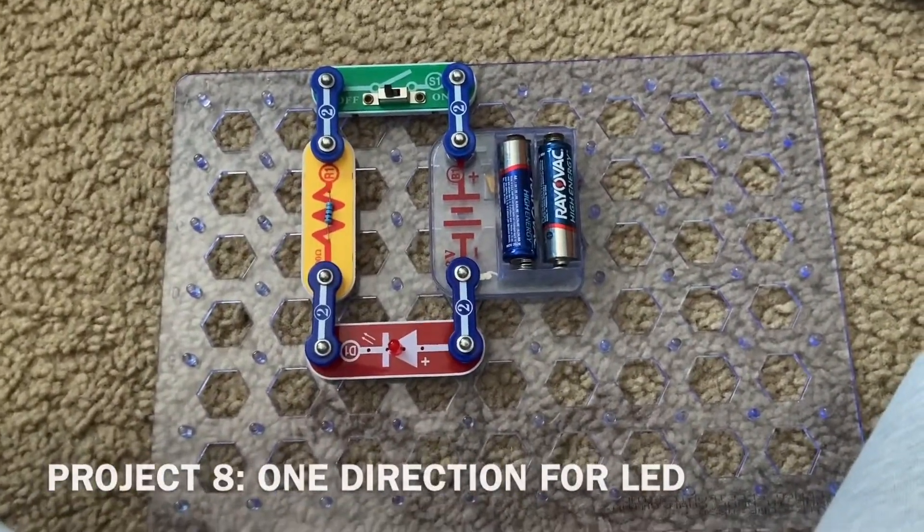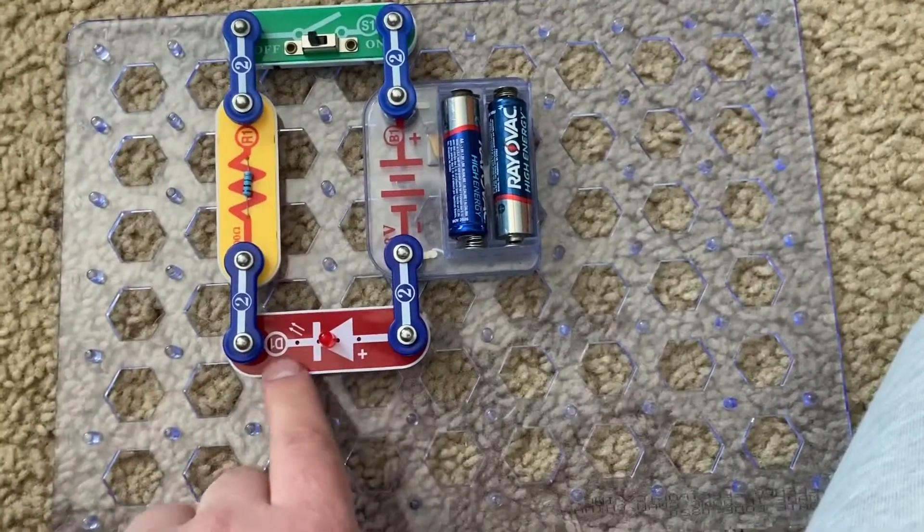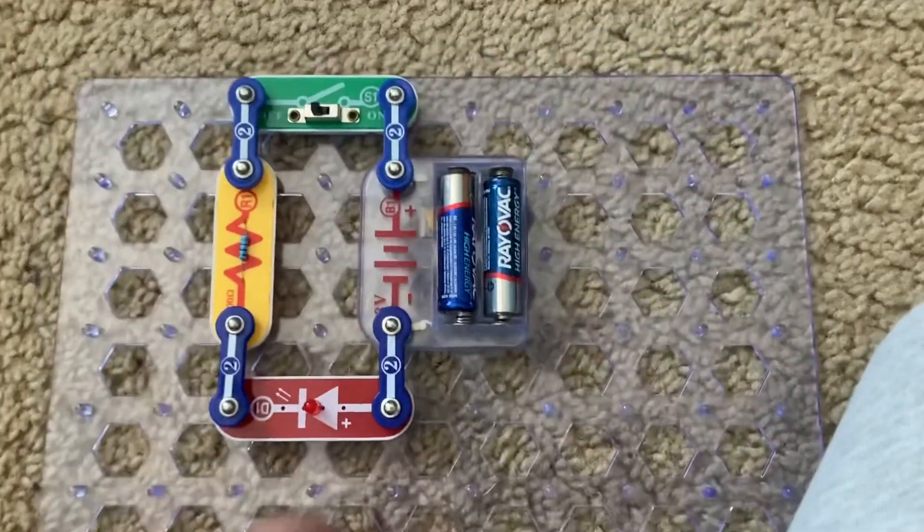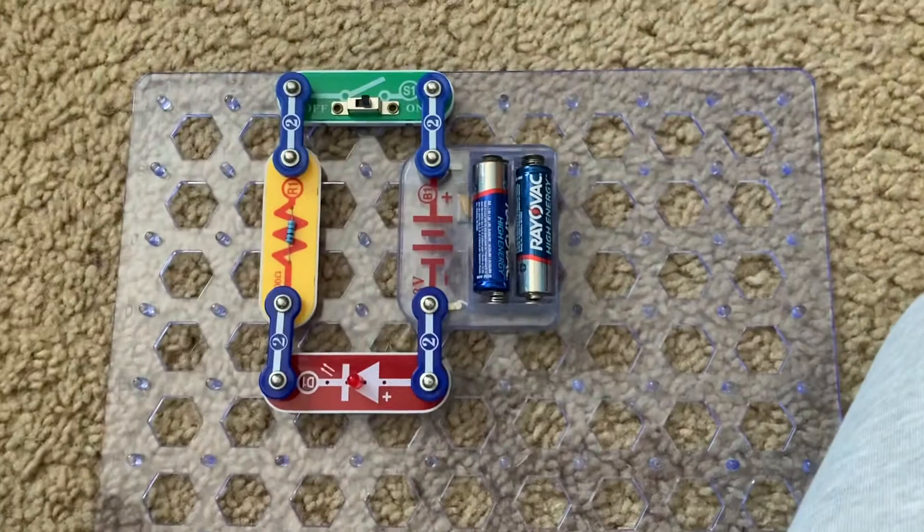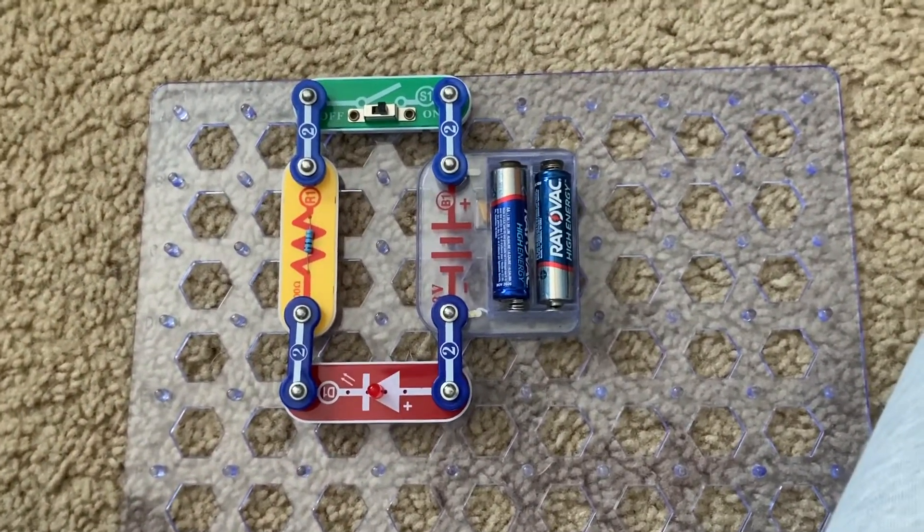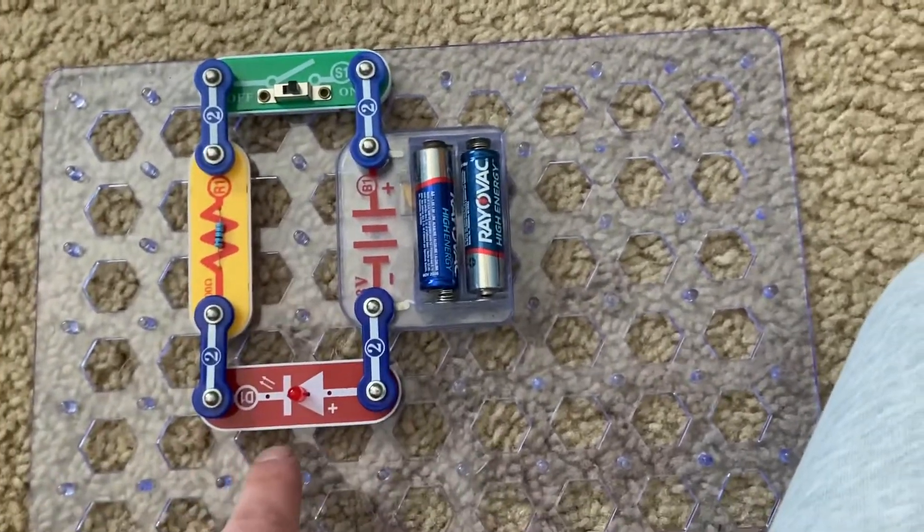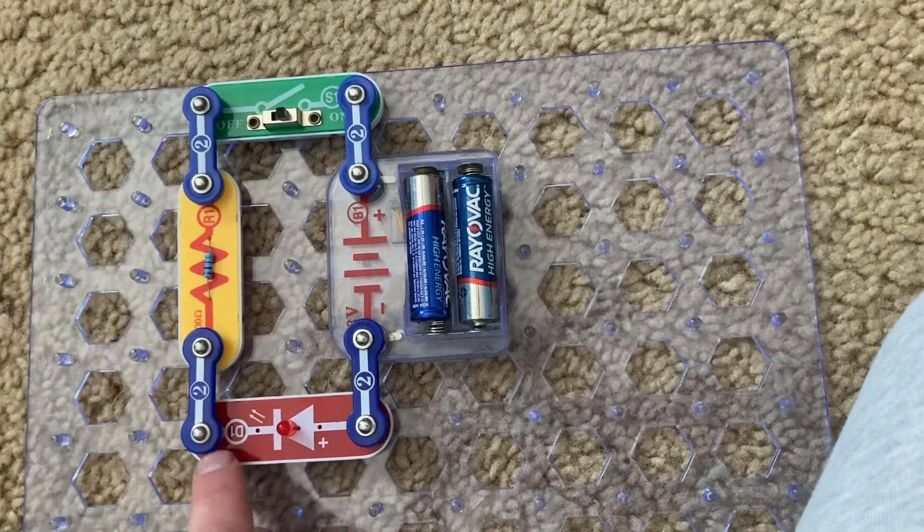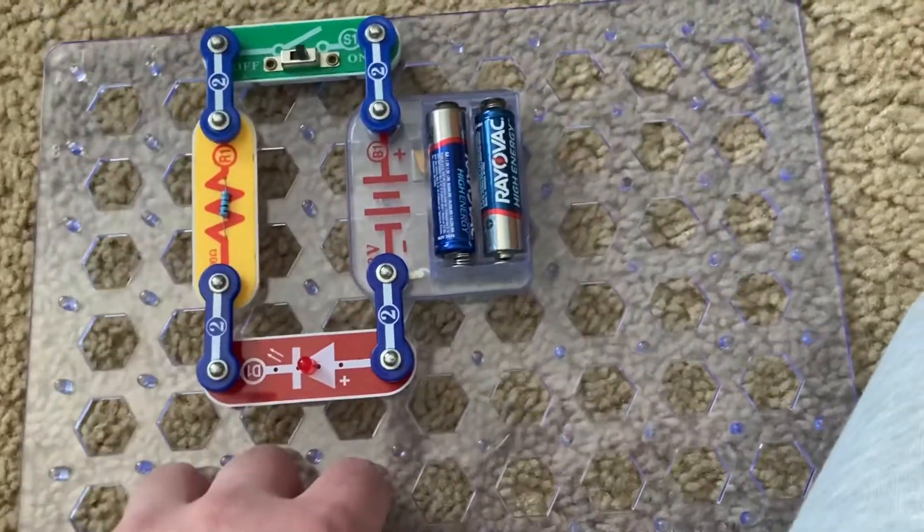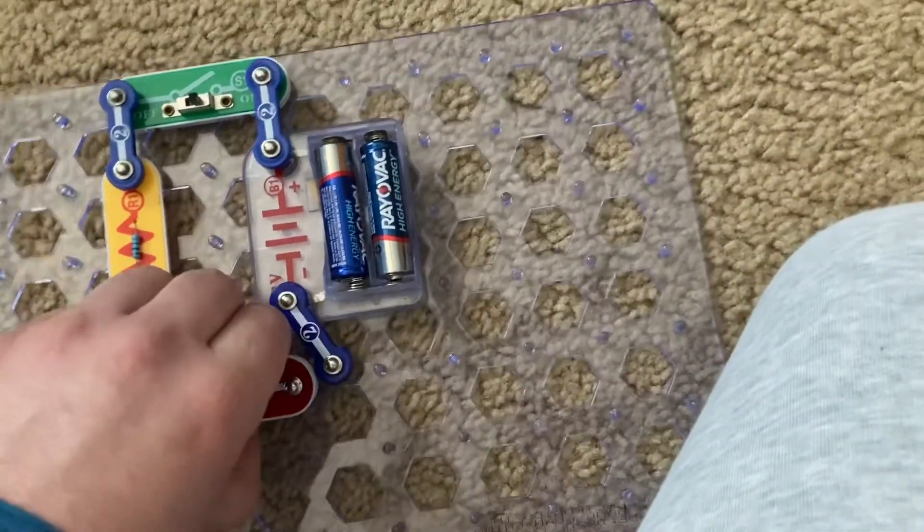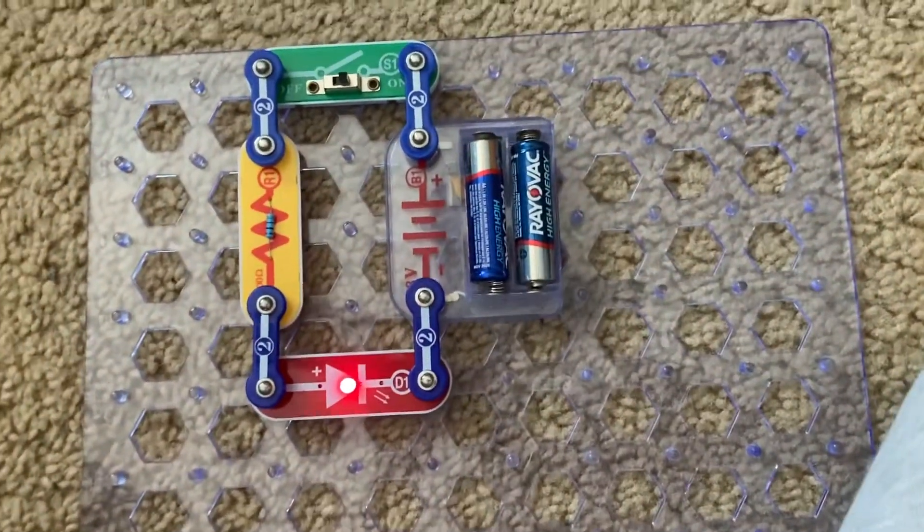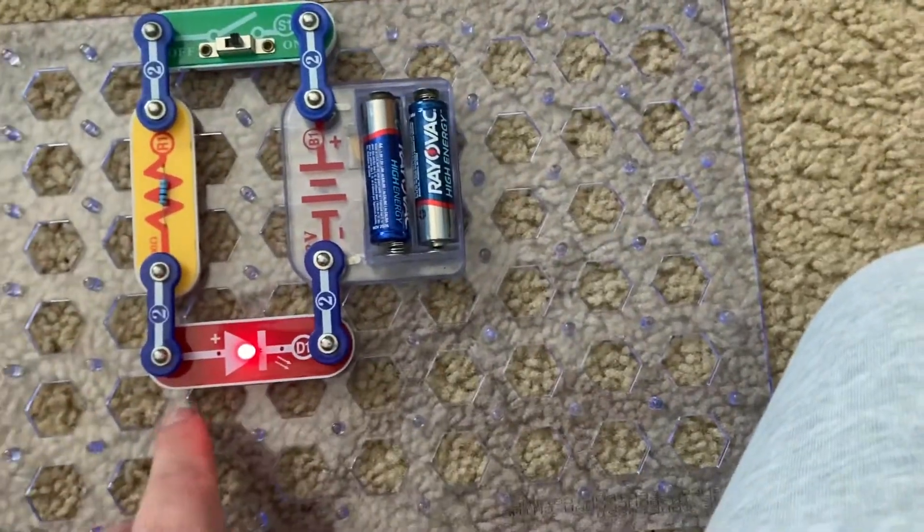Project eight is one direction for LED. I rotated the red LED so that the positive end is on the right. Now, when I turn on the slide switch, nothing happens. That's because current can only flow through a light-emitting diode in one direction. It cannot flow both ways. And the LED acts like a check valve to enable the current to flow in only one direction. If I was to rotate the LED, then it will come on because now current can flow through it in this direction.